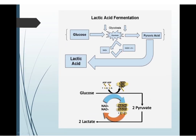Now for the step-by-step mechanism of lactate formation: Step one is glycolysis, which is independent of oxygen and remains the same in both fermentation pathways. Step two involves pyruvate being acted upon by the enzyme lactate dehydrogenase working with the coenzyme NADH. This converts pyruvate into lactate and NADH is oxidized back to NAD⁺. Remember that the two pyruvate molecules produced will yield two lactate molecules.